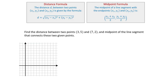Let's solve the following problem. Find the distance between two points (3, 5) and (7, 2), and the midpoint of the line segment that connects these two given points. Let the point (3, 5) be our first point and we will mark it as x1, y1, and let (7, 2) be our second point — this will be x2, y2.